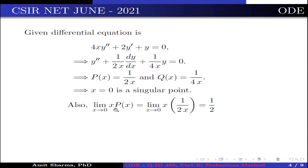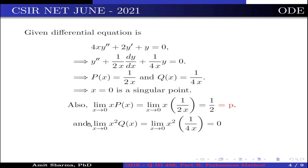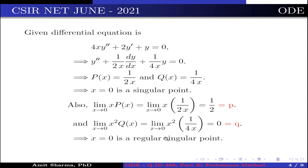Computing: lim(x→0) x·p(x) = lim(x→0) x·(1/2x) = 1/2. This is the value of p. And lim(x→0) x²·q(x) = lim(x→0) x²·(1/4x) = 0. This is the value of q. This implies x = 0 is a regular singular point.